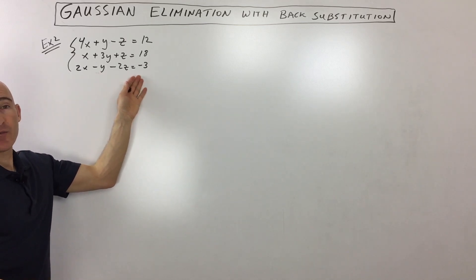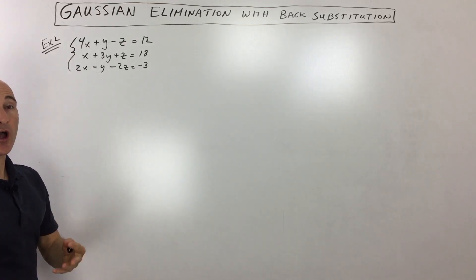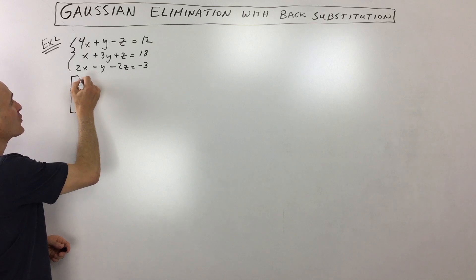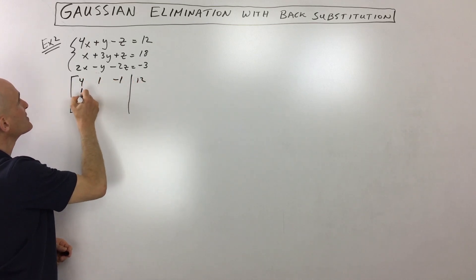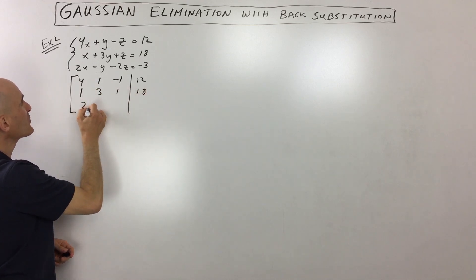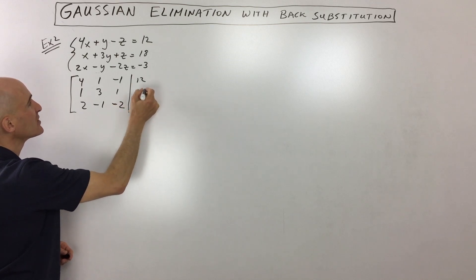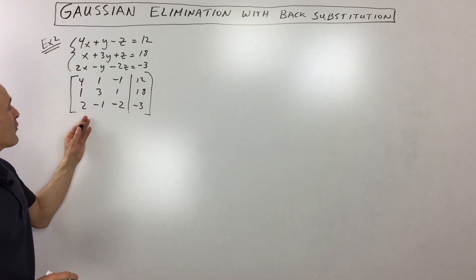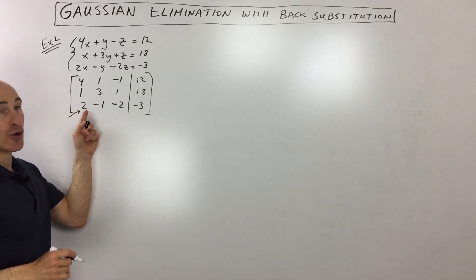Example number two: we've got a three-by-three system — three variables, three equations. The first thing we want to do is write the augmented matrix using the coefficients. We've got some larger numbers here so we might need a calculator. Our first step is to get zero in the lower left-hand corner.